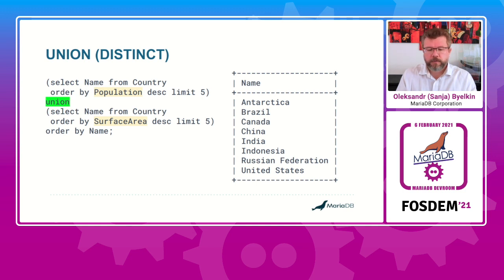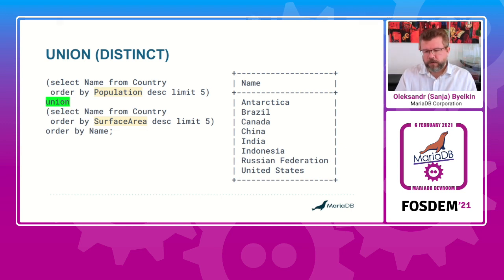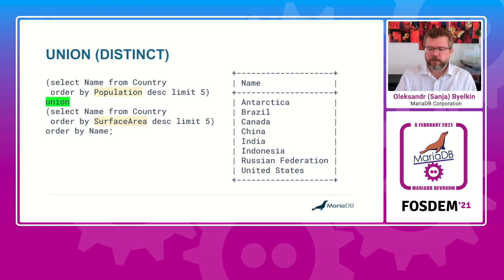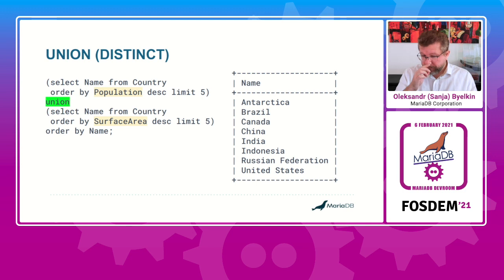We order countries by population and take the top five, then union the result with the same table but ordered by surface area and take the top five. We got eight records, not ten, because there were some duplications and the distinct operation removes them. Note that union is used without DISTINCT because distinct is the default — you can mention it or skip it and the result will be the same.